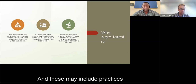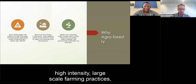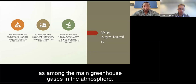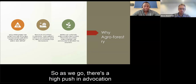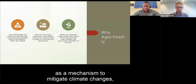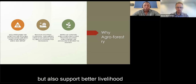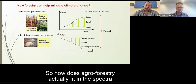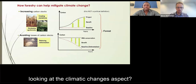Agriculture-related emissions include practices such as shifting cultivation, high-intensity large-scale farming, and animal husbandry, which has contributed to a massive increase in methane as a greenhouse gas. There is therefore a strong push and advocacy for better agricultural practices — including agroforestry — as a mechanism to mitigate climate change and support better livelihoods while reducing emissions over time.